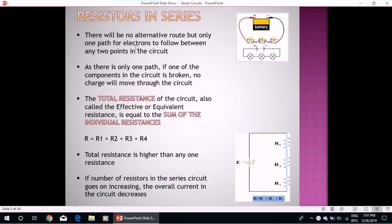There will be no alternative route but only one path for electrons to follow between any two points in the circuit. As there is only one path, if one of the components in the circuit is broken, no charge will move through the circuit.